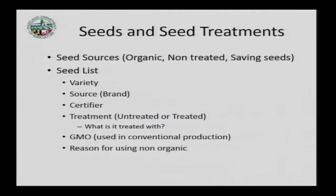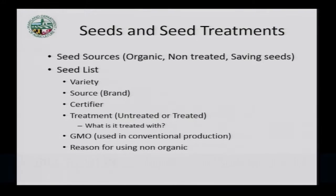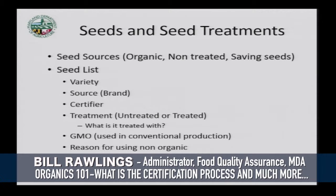Note whether the product is treated and what it's treated with — a fungicide or an inoculant — and we need to verify that treatment is allowed. If you're using GMO seeds, it's because you're a split operation with some conventional production. List your reason for choosing non-organic seed, such as the variety not being available, or the disease resistance of that seed being superior to the organic variety.